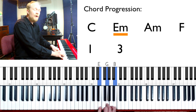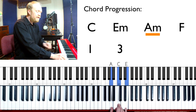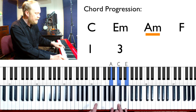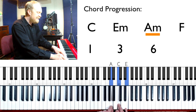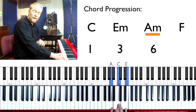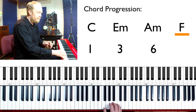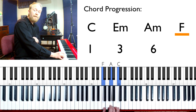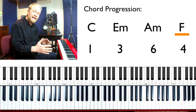The next chord was an A minor chord. A is the sixth note in the C major scale, so that makes it the six chord, or the six minor chord. And the fourth chord we had was F, which is the four chord in the key of C.